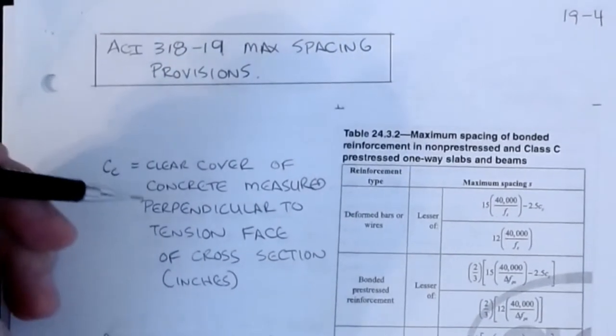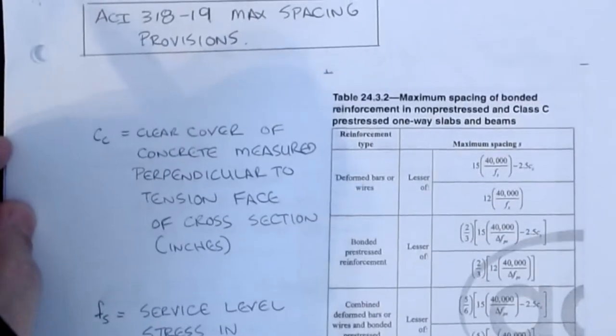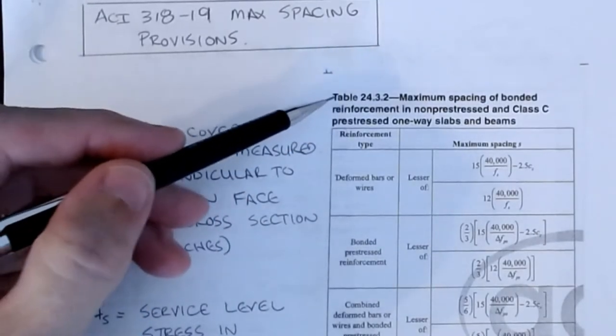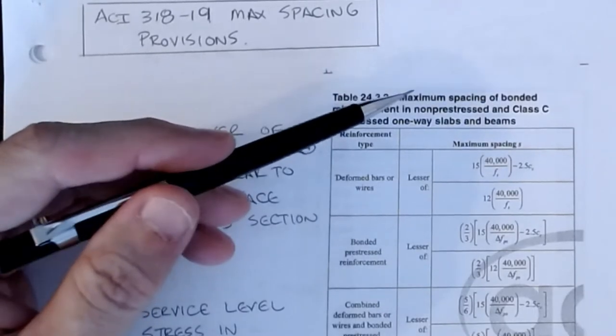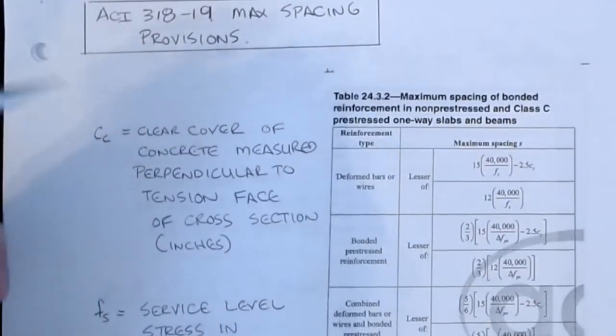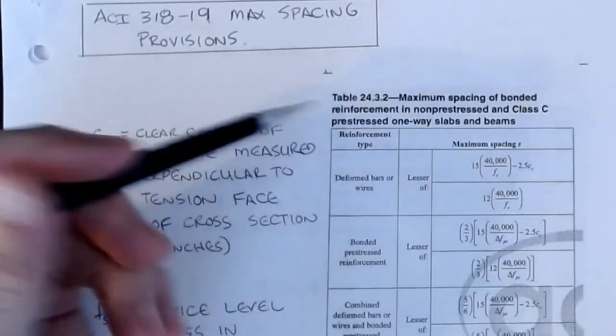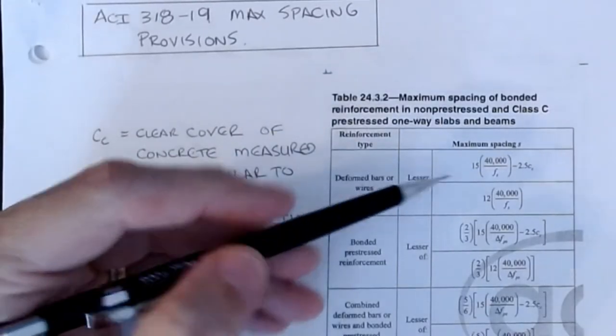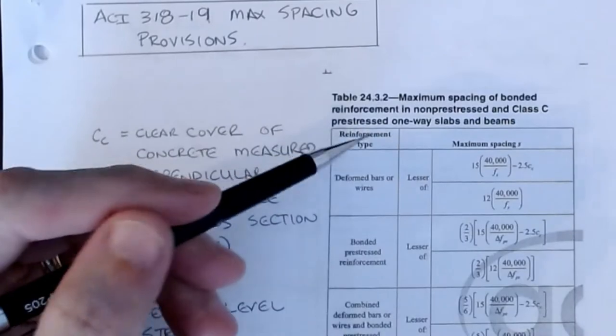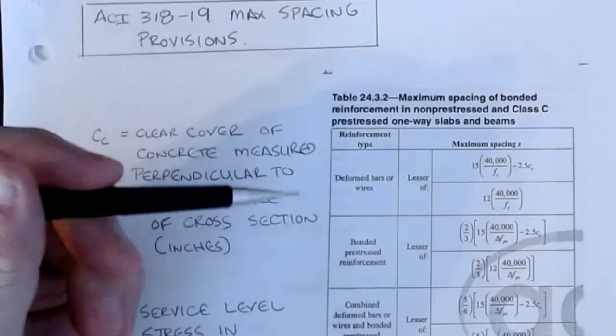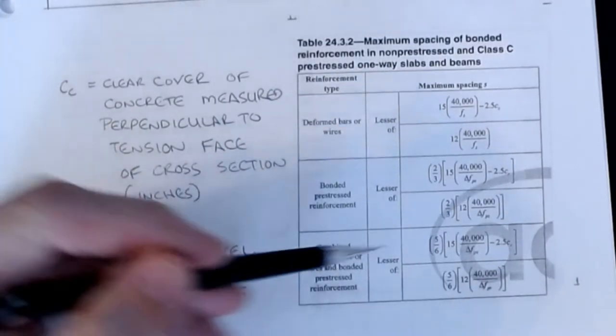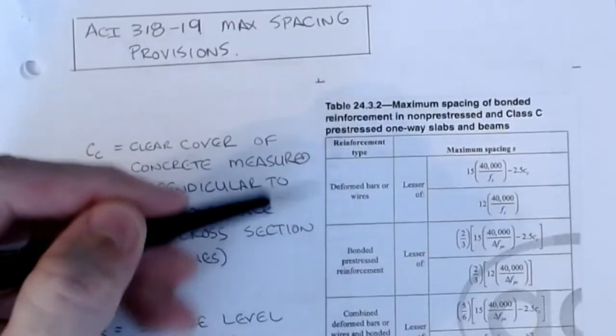The ACI code currently in the 318-19, instead of having you calculate crack provisions, they try to accommodate for things based off of these max spacing provisions, and you can find these down in section 24.3.2, or in this case, it's the table 24.3.2, which is maximum spacing of bonded reinforcement in non-prestressed and class C prestressed one-way slabs and beams. So these are the crack control characteristics. And in all of these equations, you can see, like, the first one, that if I have deformed bars or sizes, it's the lesser of these two values: 15 times 40,000 over Fs minus 2.5 times C sub C, or 12 times 40,000 over Fs.